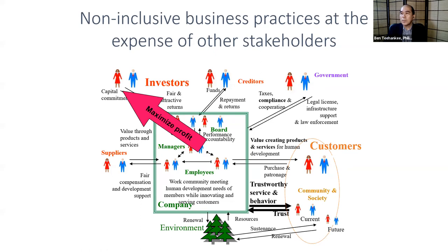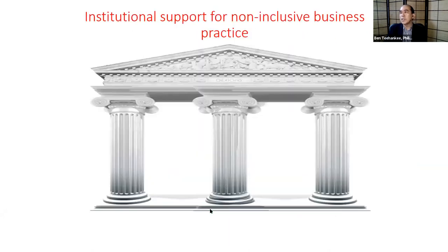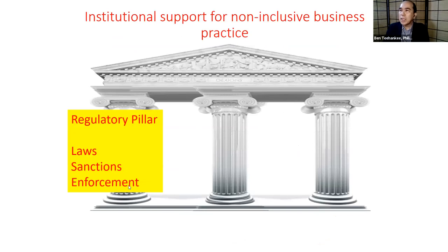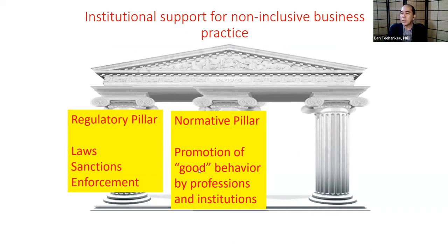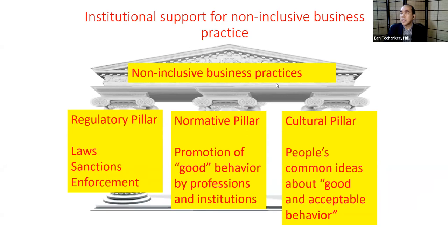What is institutionalized or semi-permanent in practice is a highly exaggerated emphasis on maximizing returns to investors and giving customers cheaper and faster products. When companies pursue only these dual purposes, it usually comes at the expense of other stakeholders. The three major pillars making non-inclusive business practices semi-permanent are: the regulatory pillar — laws, sanctions, and enforcement; the normative pillar — what is considered good professional behavior; and the cultural pillar — people's ideas about what is good and acceptable behavior.